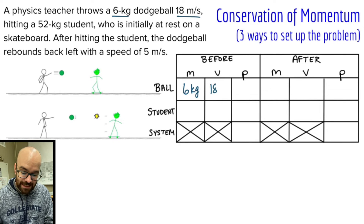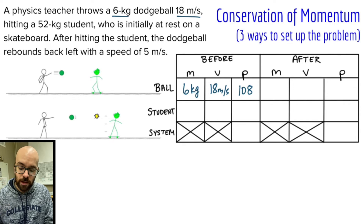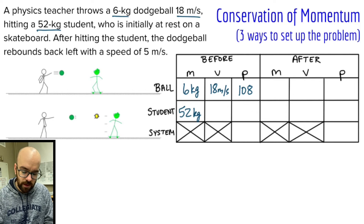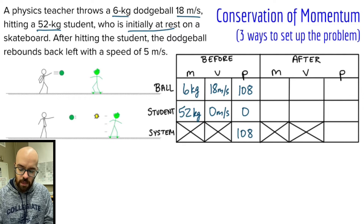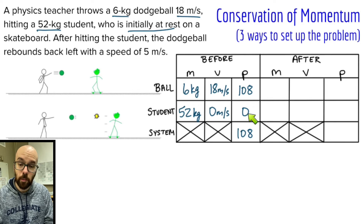It's thrown at 18 meters per second, so that's our velocity. Mass times velocity gives us a momentum of 108, so I fill that in. It hits a 52 kilogram student — that's the student's mass. The student is initially at rest, so zero meters per second. 52 times zero gives a momentum of zero. Adding the ball's and student's momenta together, the total system momentum is 108.